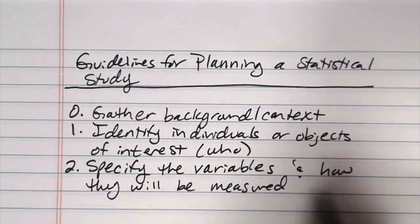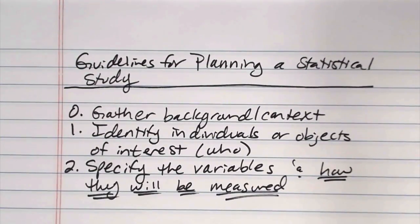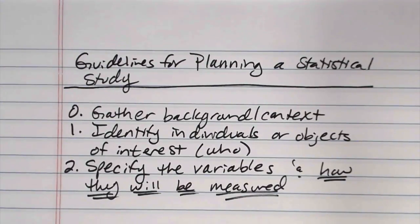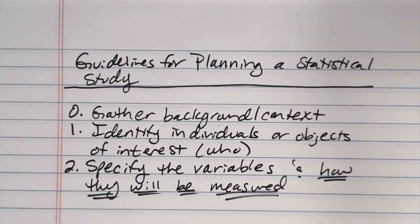Specify the variables and how they will be measured. And you really want to be specific with this how they will be measured part. If you're going to be sending out a team of researchers that you're leading, but you're not going to be conducting all of the research yourself, one of the issues you can run into is if people aren't taking measurements consistently on your research team, you can end up getting a lot of data back that you can't ultimately use for anything because it's not consistent data.